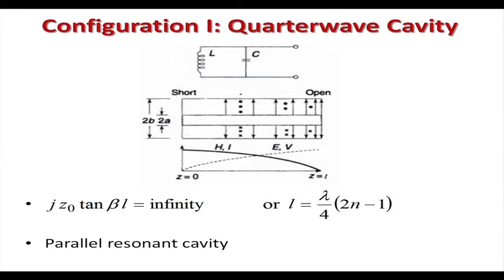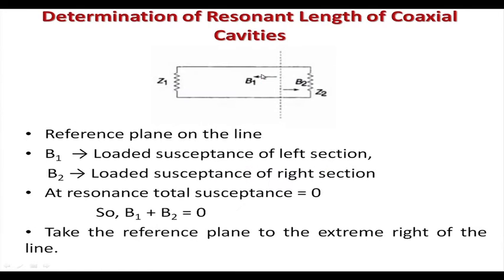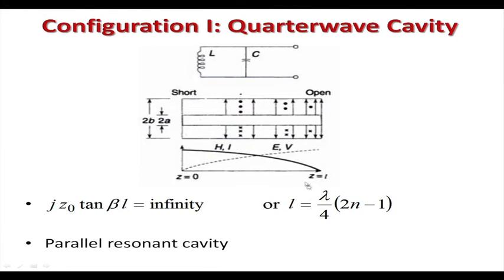This is called the quarter-wave cavity because its length is λ/4 times some odd integer. This gives you a parallel resonant circuit. If you want to create a parallel resonant circuit, take a quarter-wave cavity. The second configuration is the half-wave coaxial cavity: both sides are shorted, giving a series resonant circuit.